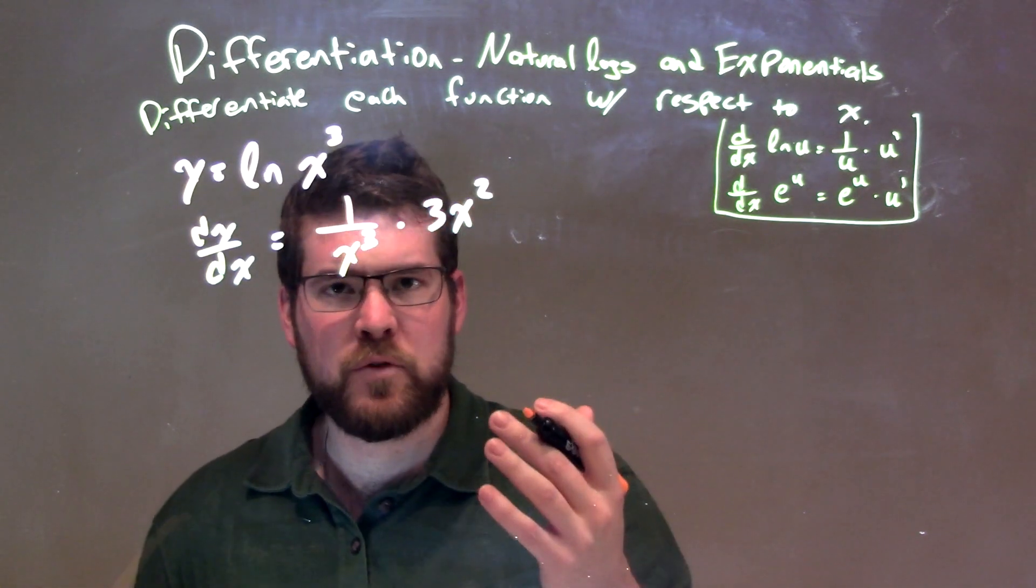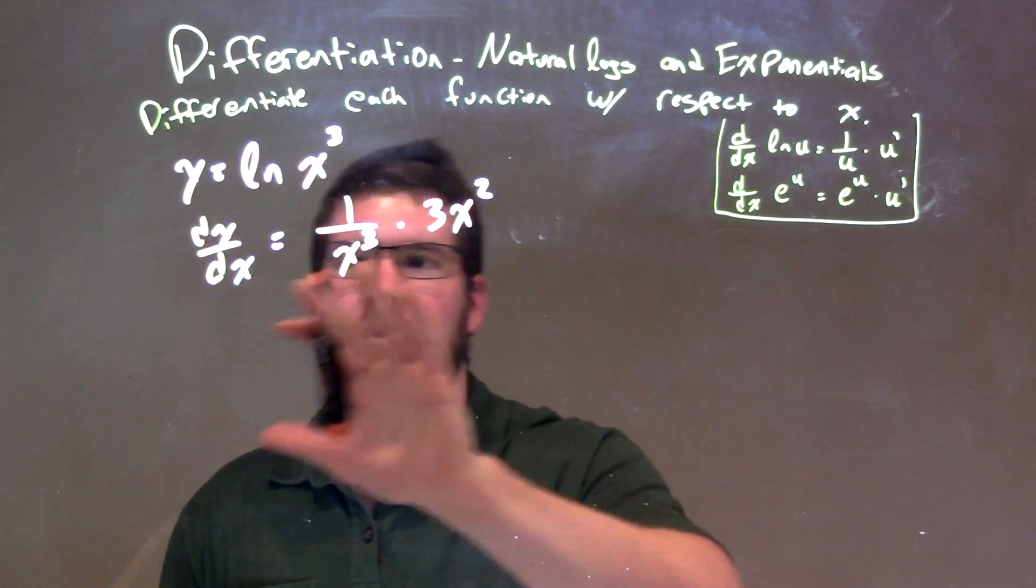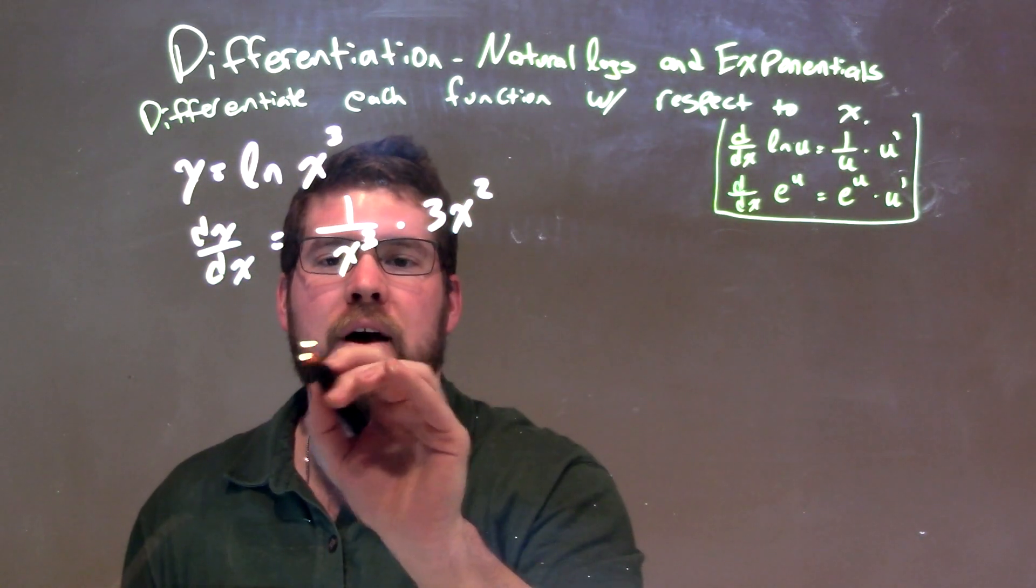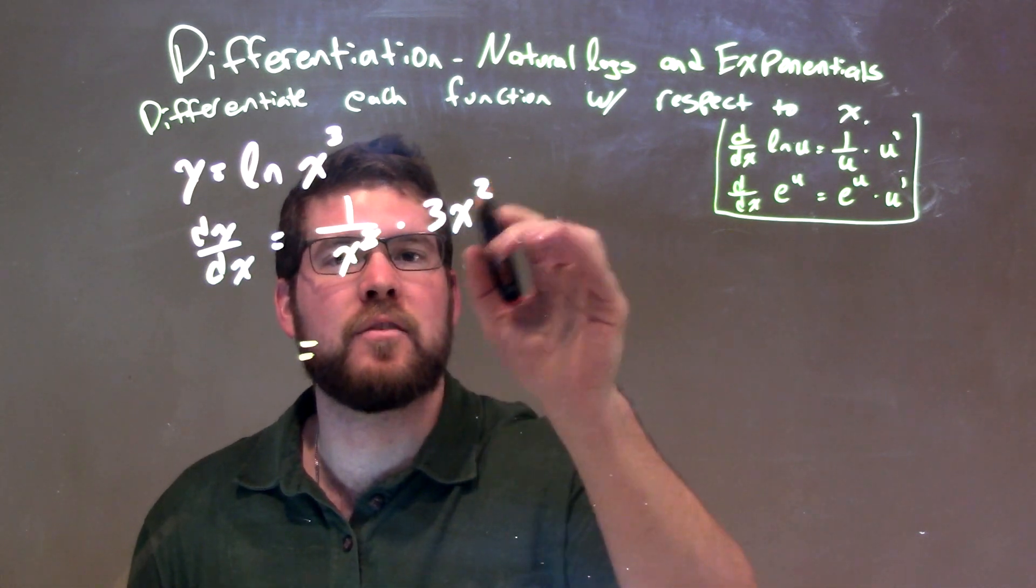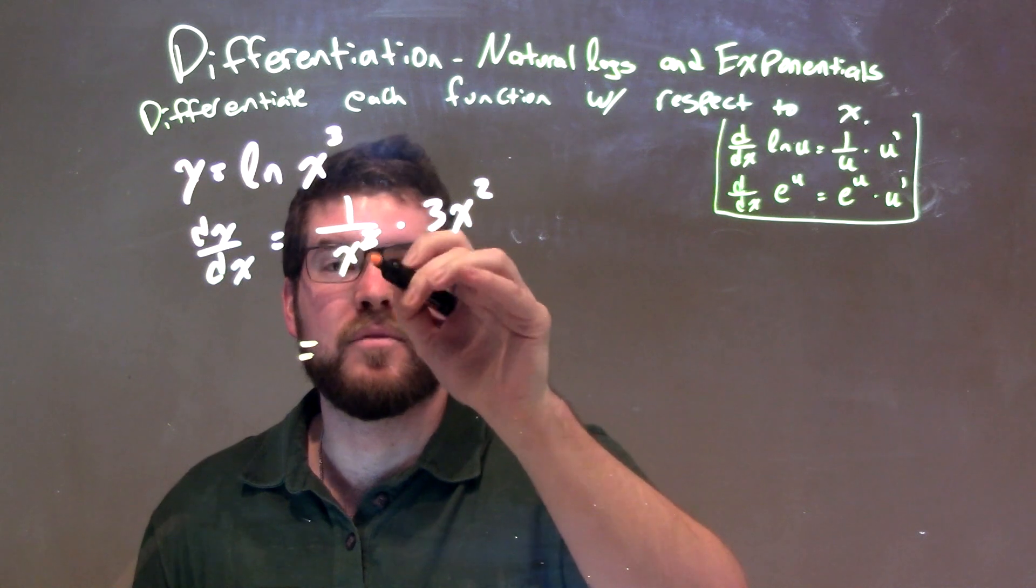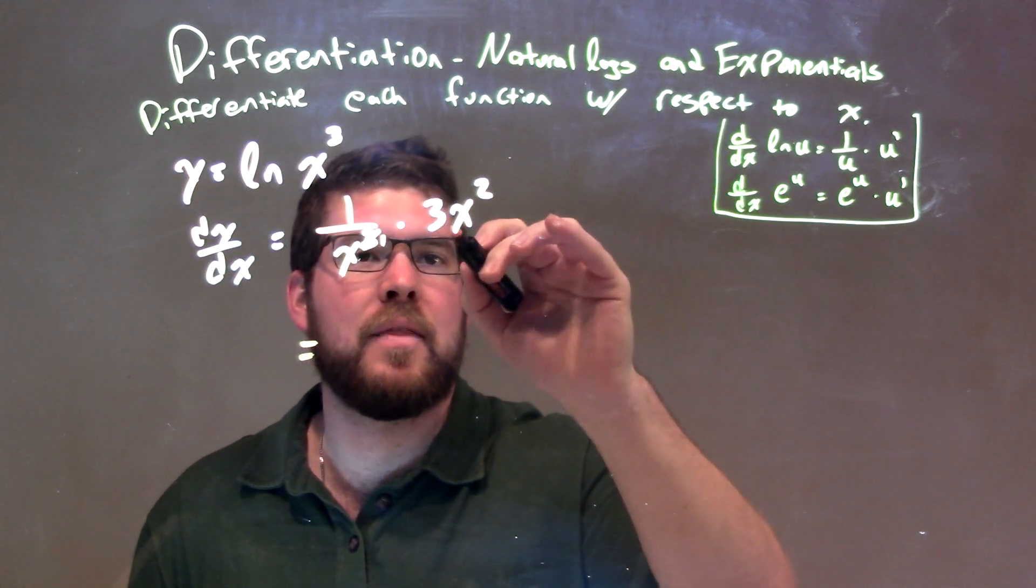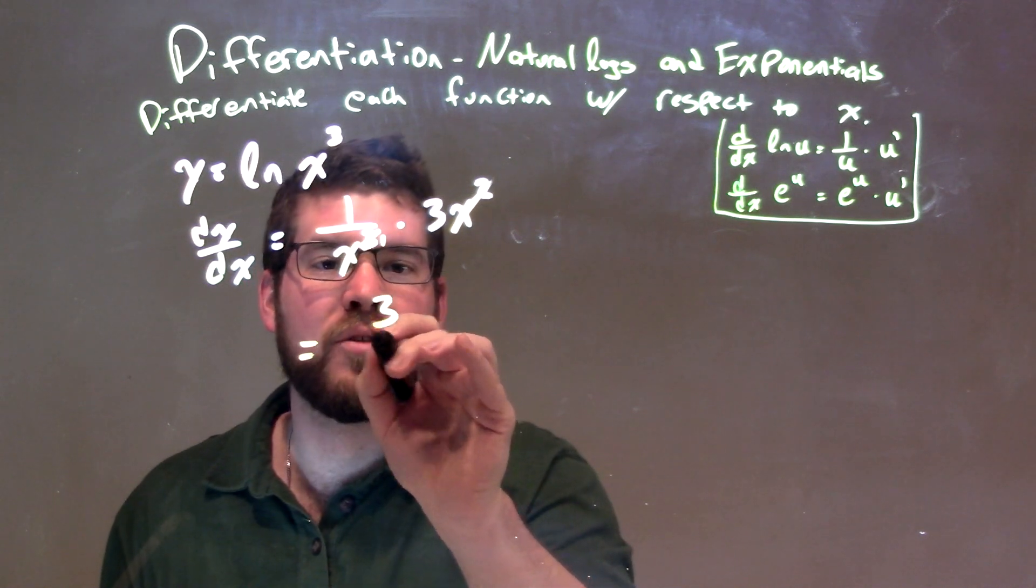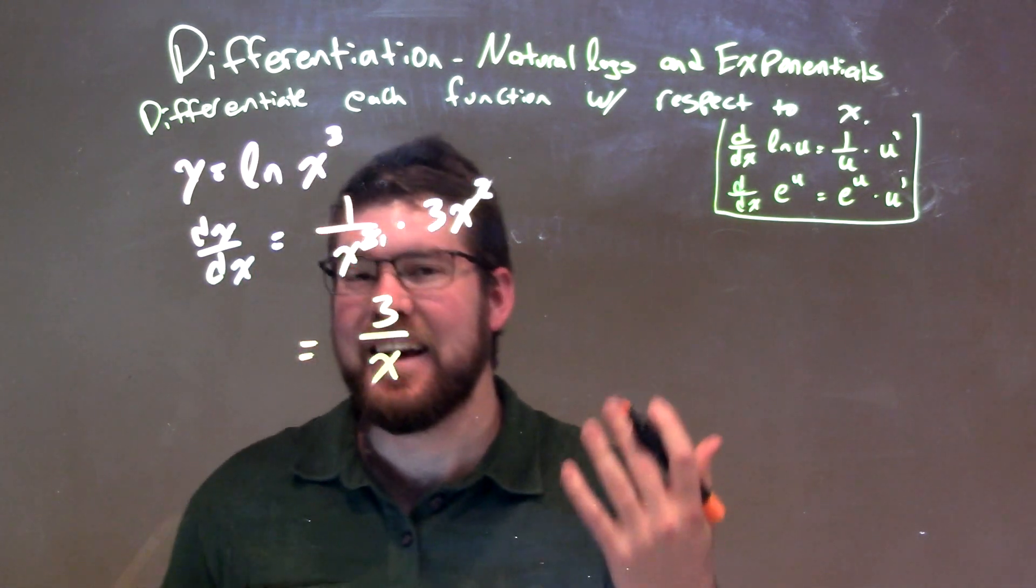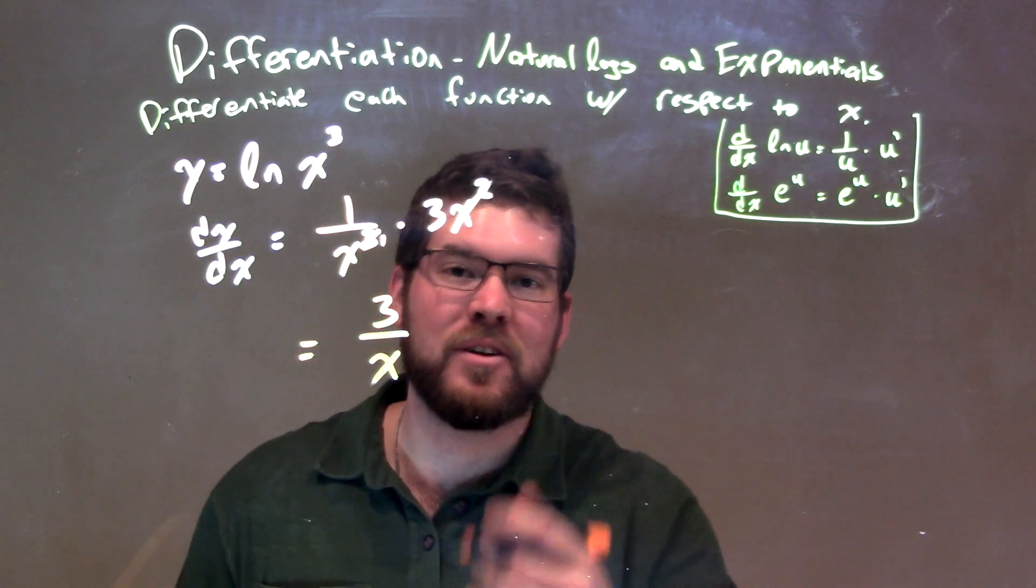So, we can simplify this a little bit from here. We've taken the derivative, but now let's simplify it. Well, the x squared and the x to the third, we cancel out these x terms, and the third power becomes the first power. We eliminate x squared from there, so we're left with 3 over x, and there is our final answer, our derivative.